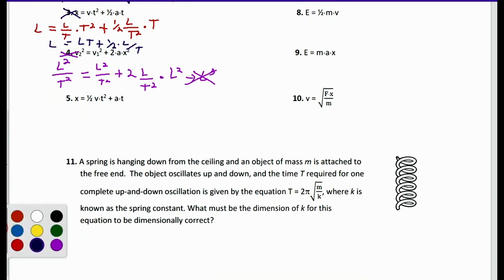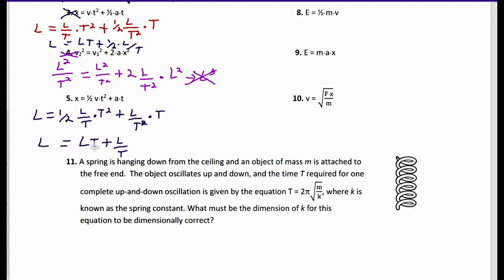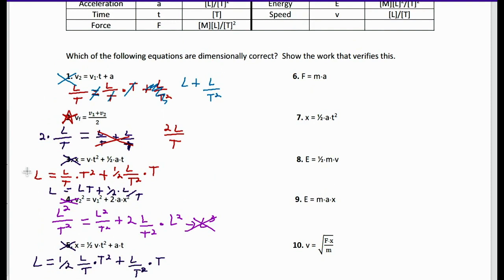Number five: X equals one-half V times T² plus A times T. X is L. One-half V is L/T, times T² gives LT. A is L/T², times T gives L/T. So we'd need L to equal LT plus L/T, which doesn't work — one part is L times T and the other is L over T. Equation five is not dimensionally correct. So far only equation two is correct.